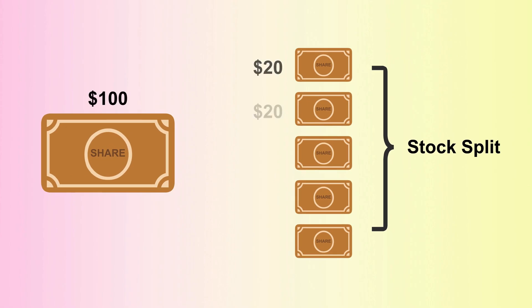When a business divides its existing shares into more shares, it performs a traditional stock split. The total value of the company's shares stays the same despite an increase in share count, but a decrease in share price.